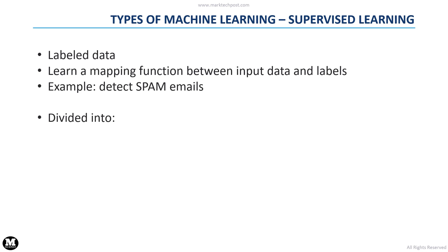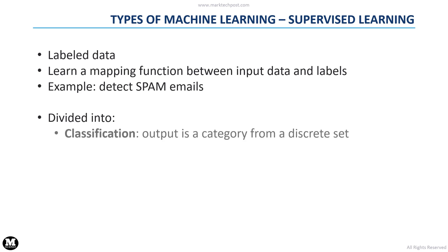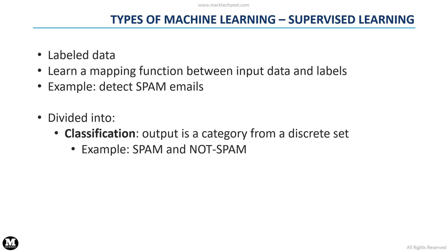Supervised learning methods can be divided into classification and regression. With classification, the output of the model is a category from a discrete set of categories. For example, we can consider a model which predicts if an email is spam or not spam. In this case, we have a set of two possible output categories.